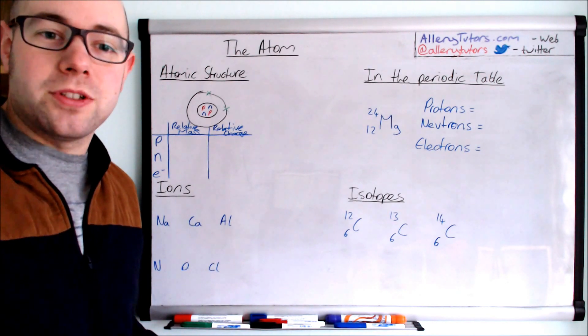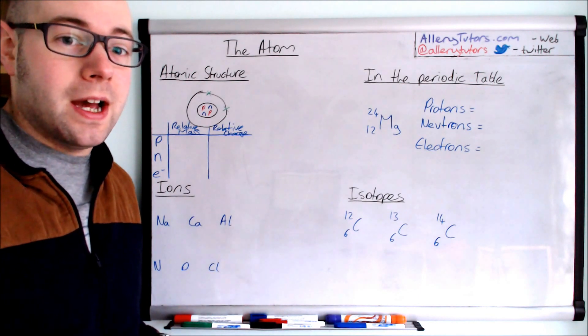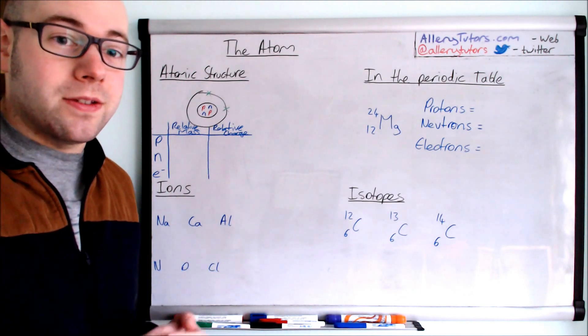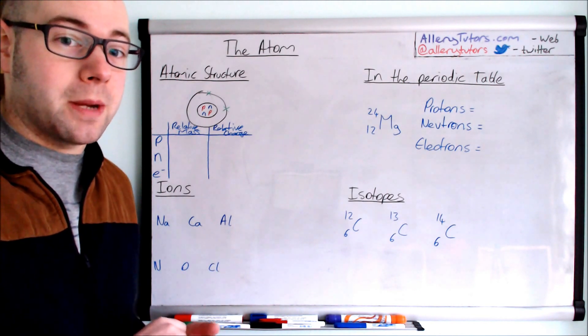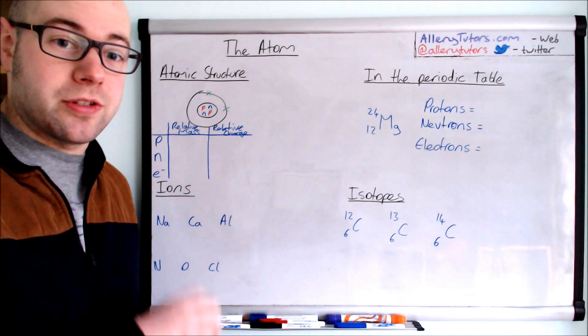So we'll start with atomic structure. Now the atom is made up of protons and neutrons in the middle and electrons that spin around in orbitals around the outside of it. So these are also known as subatomic particles because they make up the actual atom or the structure of the atom.